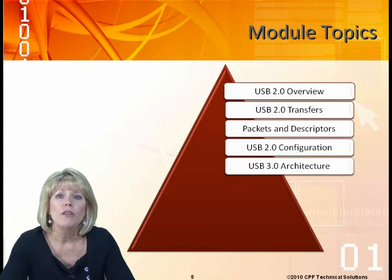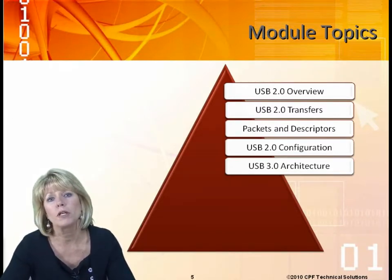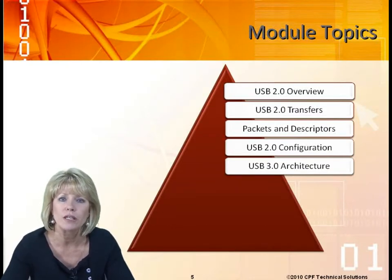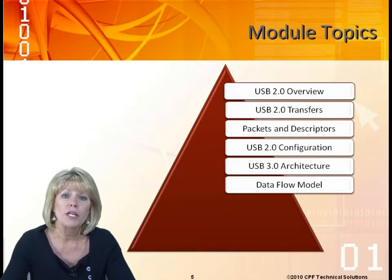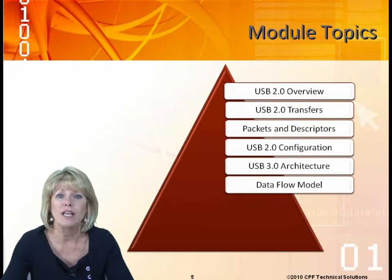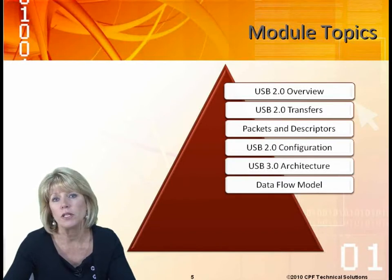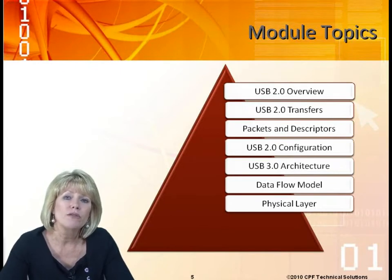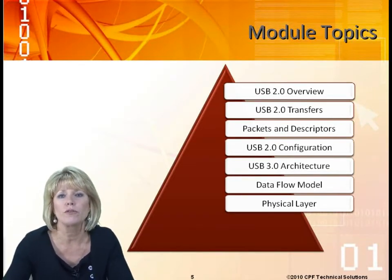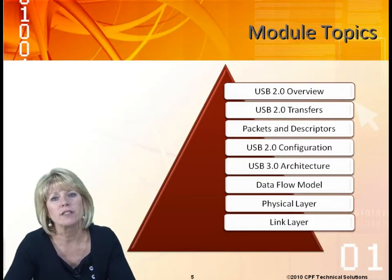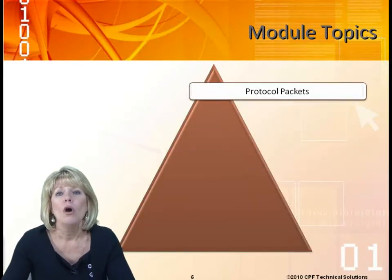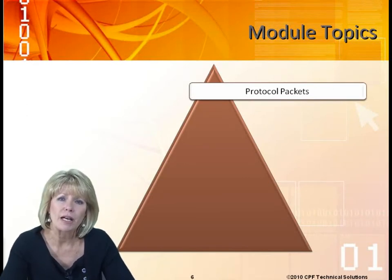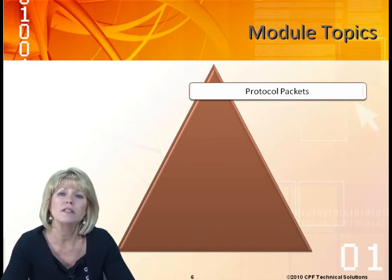Then we'll get into configuration in USB and look at how the configuration model works. We'll get into the USB architecture itself and look at the big picture first — what USB 3.0 is — then dive into specific details. We'll look at the new data flow model, which really improved efficiency compared to USB 2.0. We'll then look at the layers: the physical layer and its new requirements, the data link layer and its many changes, and then protocol packets — there are a lot of new packets added to USB 3.0.